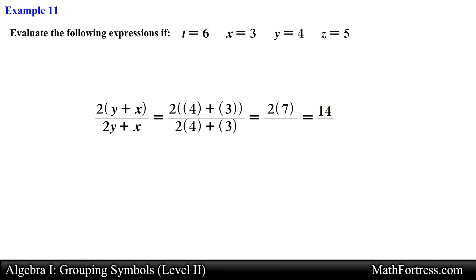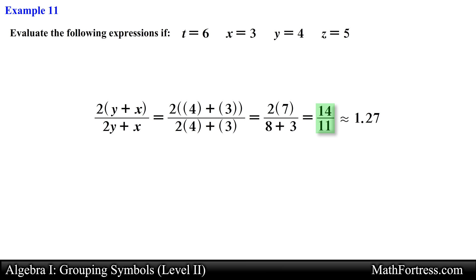Next we take care of the denominator. We first multiply 2 and 4 which reduces to 8, then add 3 to get 11. The final expression is 14 over 11. For the most part leave your answer as an improper fraction — there is really no need to simplify it as a decimal. But if you like, 14 over 11 is approximately equal to 1.27 after rounding to the nearest hundredth.